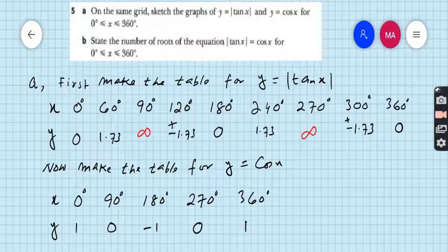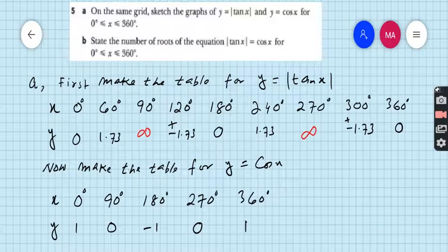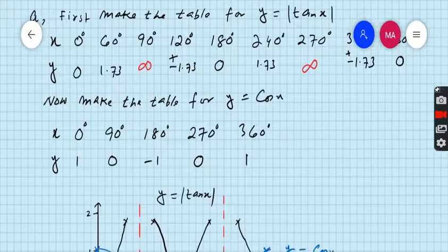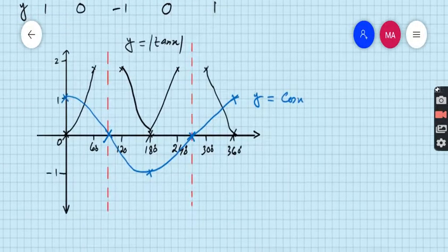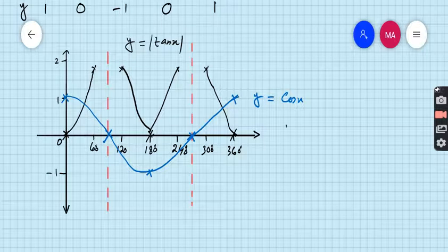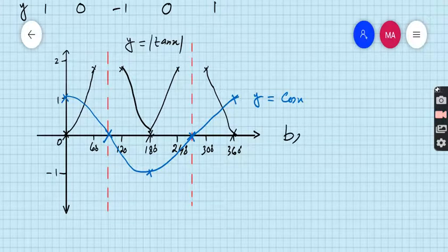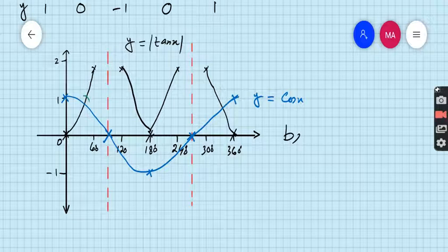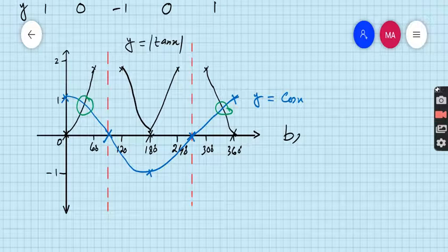What is next part? Part B: State the number of roots of the equation tan x absolute equals cos x. So very simple part B. Just focus on how many points where two graphs touch each other. So this is one point and this is one point.